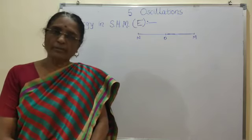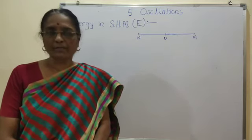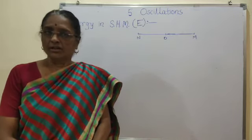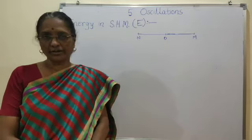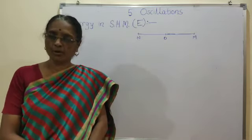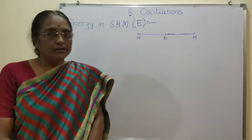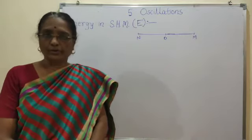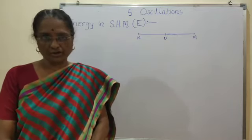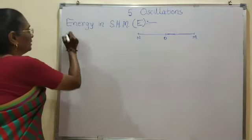The form of potential energy may be different in different examples. Like in the case of a spring-mass oscillator, potential energy is in the form of elastic potential energy. In the case of a simple pendulum, it may be in the form of gravitational potential energy. Here, we have to derive the relation for kinetic energy, potential energy, and then total energy. So let us start with the kinetic energy.